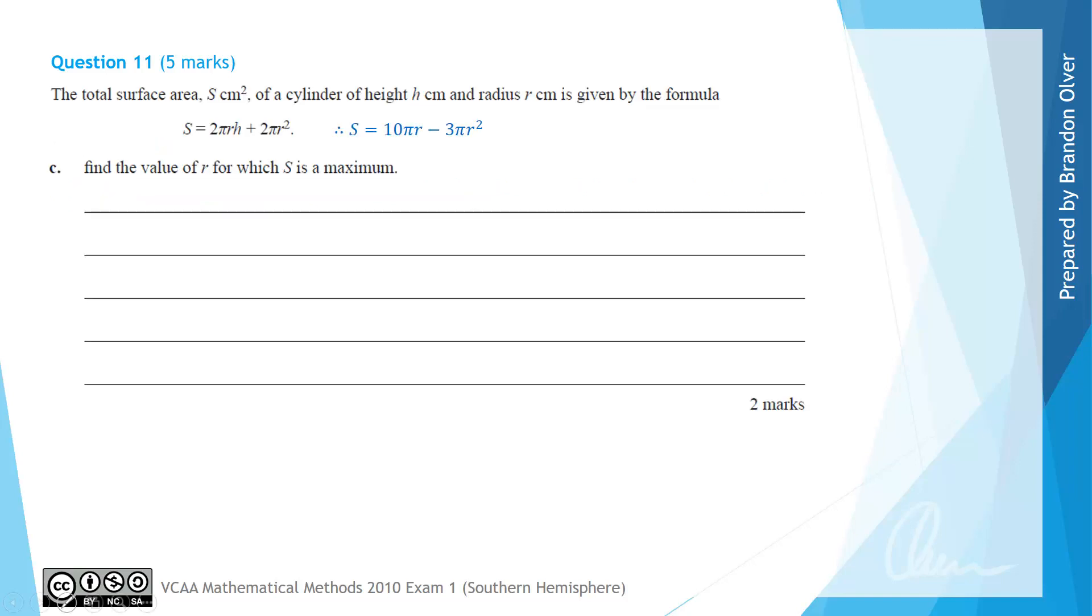For part C we're asked to find the value of r for which S is a maximum, and we've included what we found for the expression of S in terms of r from the previous slide. So to find a maximum that generally means we're going to use calculus. So what we want to do is solve dS/dr, the derivative equal to 0, to find the maximum.